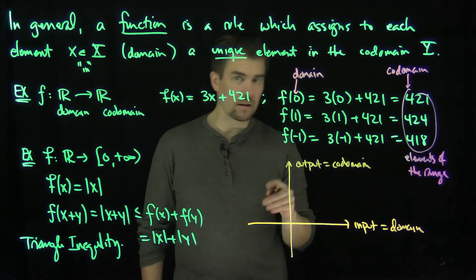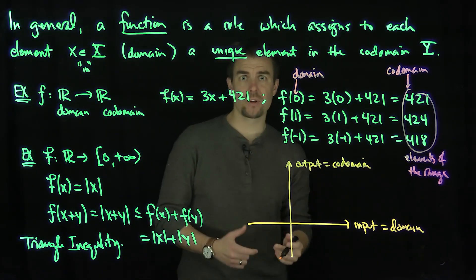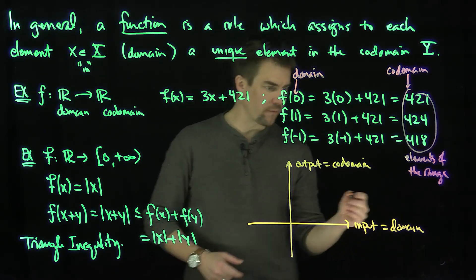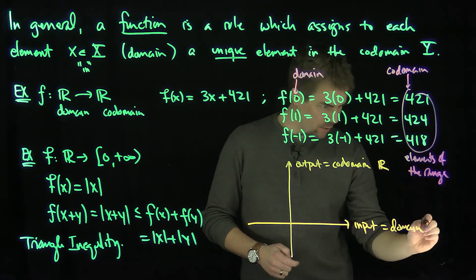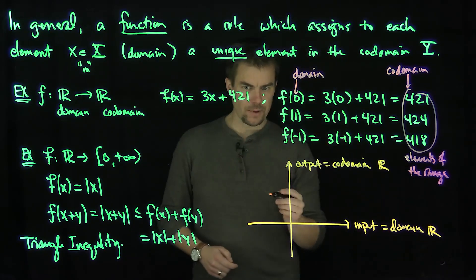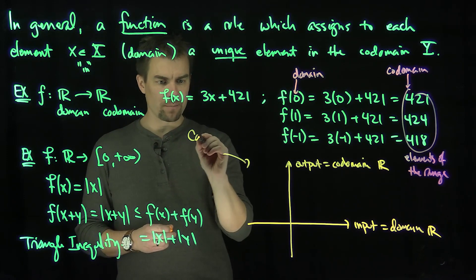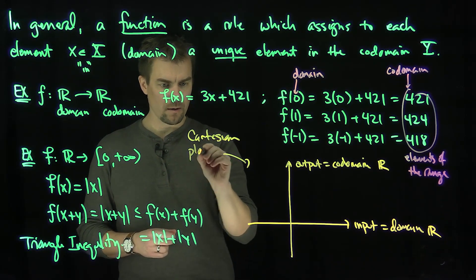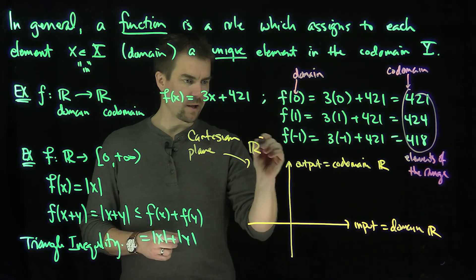So we can analytically visualize and geometrically visualize functions by plotting a graph, and we'll call this a two-dimensional real space. So in particular, if the codomain and the domain are real dimensional space, then this over here is called the Cartesian plane after Rene Descartes. And then we write it algebraically as R².